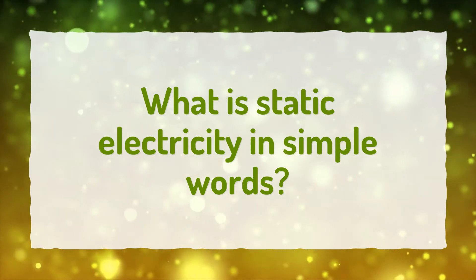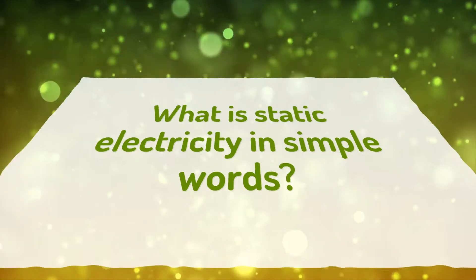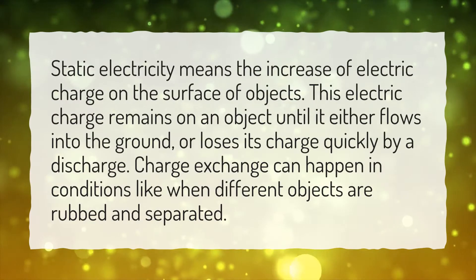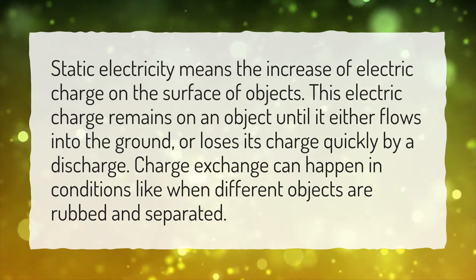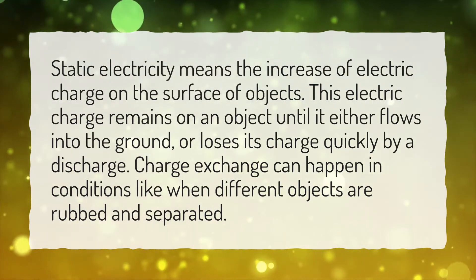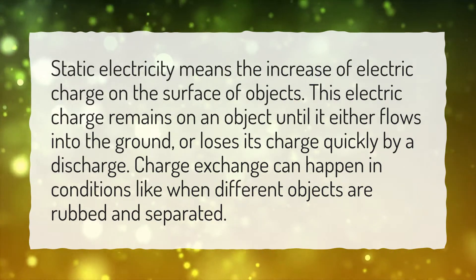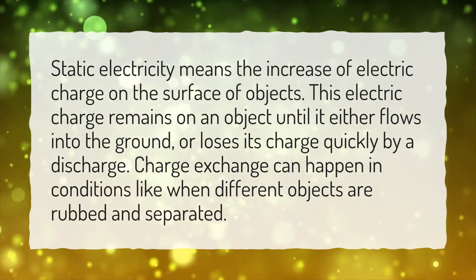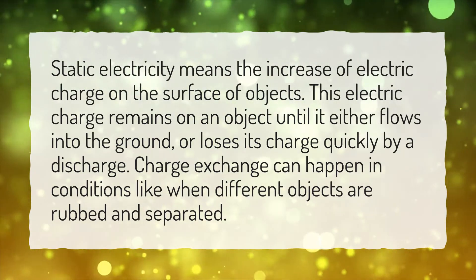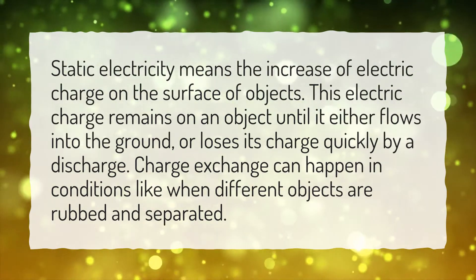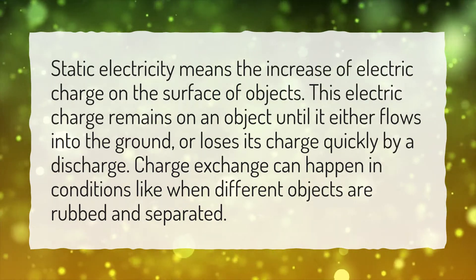What is static electricity in simple words? Static electricity means the increase of electric charge on the surface of objects. This electric charge remains on an object until it either flows into the ground, or loses its charge quickly by a discharge. Charge exchange can happen in conditions like when different objects are rubbed and separated.